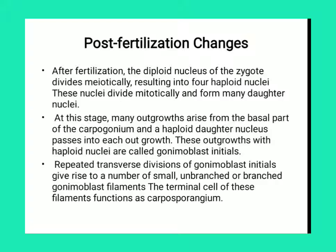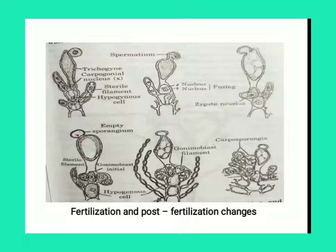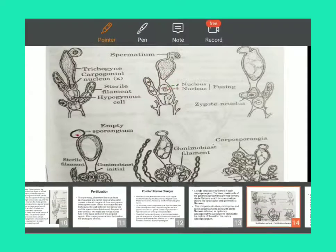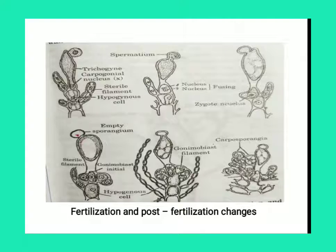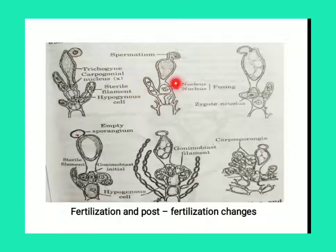After fertilization, the zygote nuclei are now diploid because the male and female nuclei have fused together to form the zygote. The zygote nuclei are first divided meiotically, meaning they are converted into four daughter nuclei by meiotic division. These daughter nuclei are then further divided mitotically.